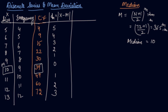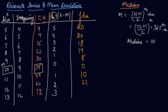Now you multiply the deviation with the frequency, as we used to find out the mean. So: 4 times 5 is 20, 5 times 4 is 20, 6 times 3 is 18, 7 times 2 is 14, 8 times 9 into 0 is 0, 10 times 1 is 10, 11 times 2 is 22, and 12 times 3 is 36. Now find the sum of F×|D|, which is the modulus — you have ignored the minus sign.